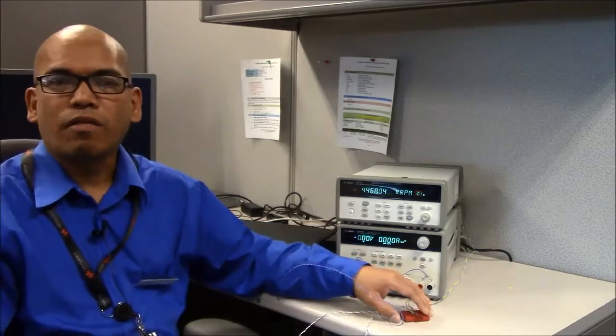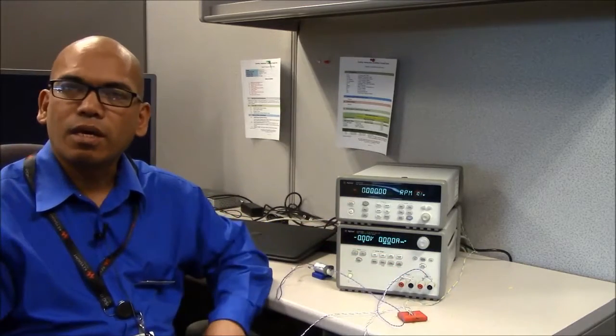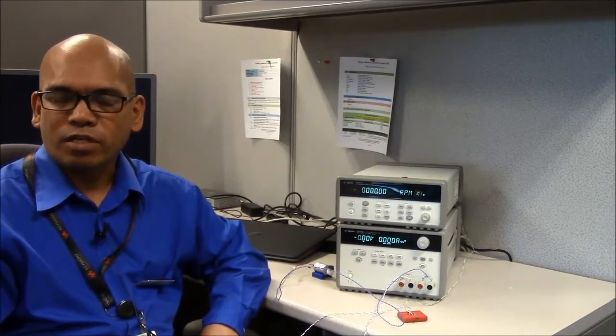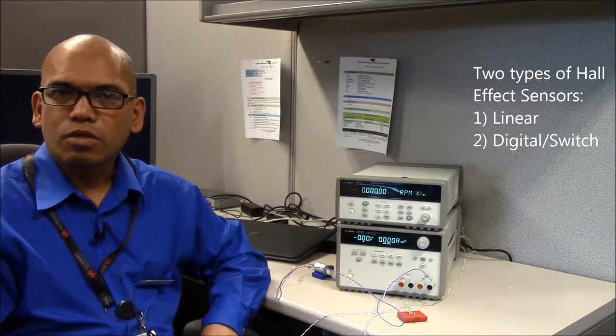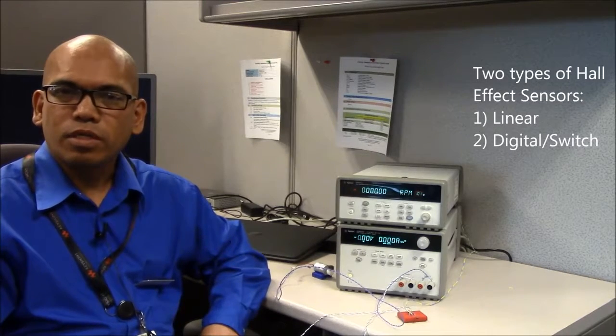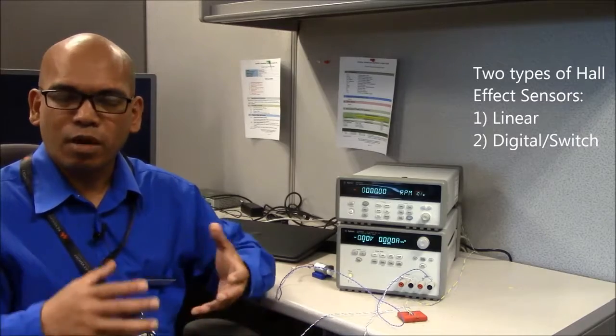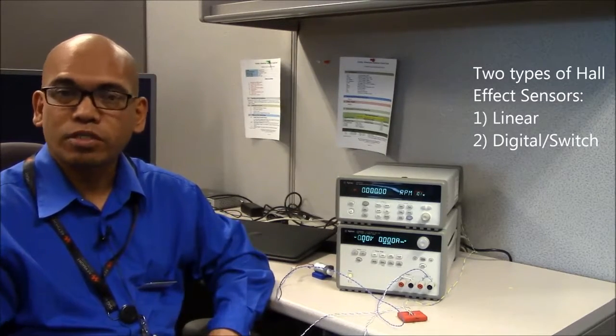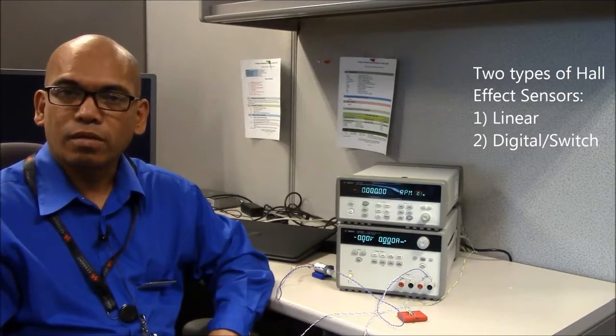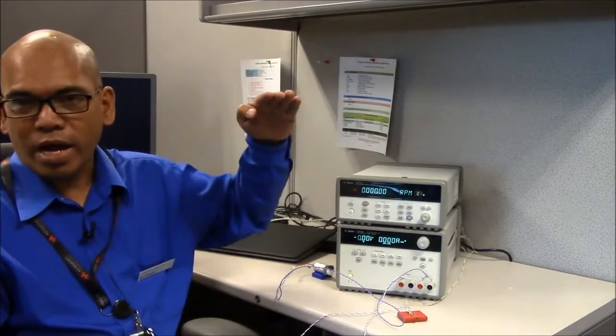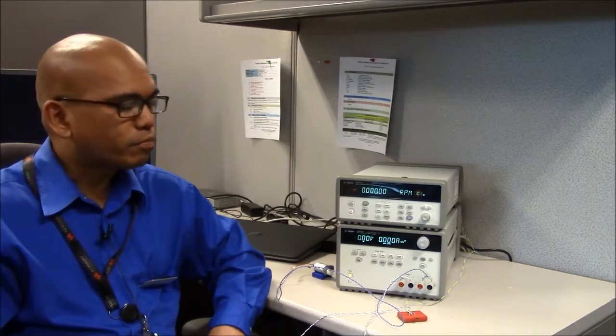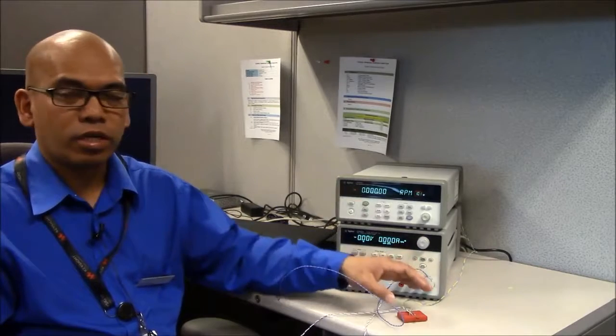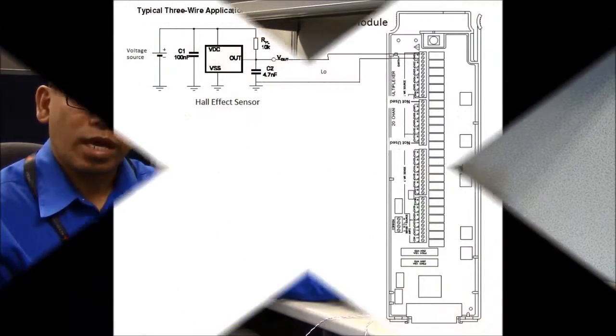Let's talk a little bit about Hall effect sensors. Generally there's two kinds of Hall effect sensor. One's linear, where the output is proportional to the strength of the approaching magnetic field, and there's also a switch kind or a digital kind where the output goes from high to low or low to high depending on the design of the Hall effect sensor. In this particular demo, I'm using a switch type.